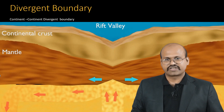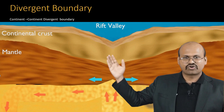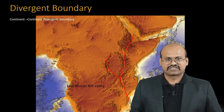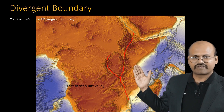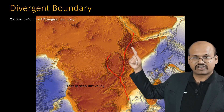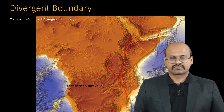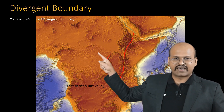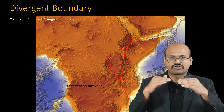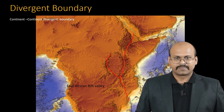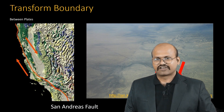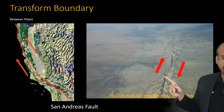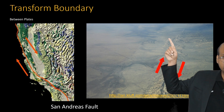At continent-continent divergent boundaries, two continental plates move away from each other, forming a rift valley. The African Rift Valley is the best example, where part of the African plate is breaking away and a rift valley is forming. Transform boundaries occur where two plates — oceanic or continental — slide against each other in parallel directions, neither converging nor diverging. The San Andreas Fault in the western United States is the best example of this kind of boundary.